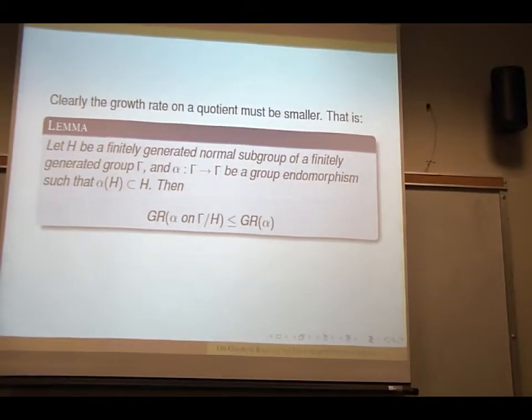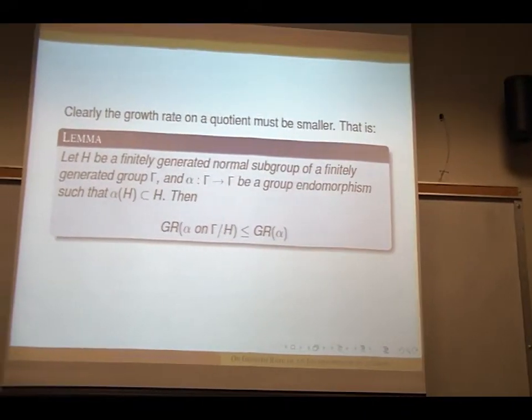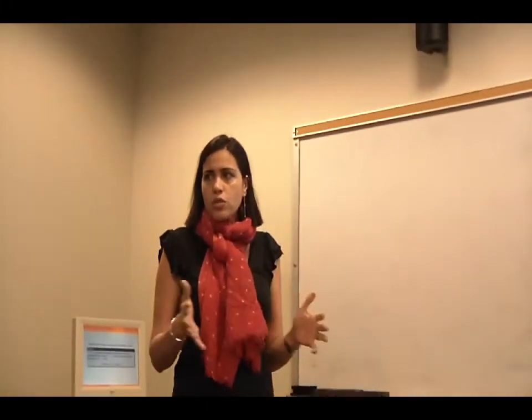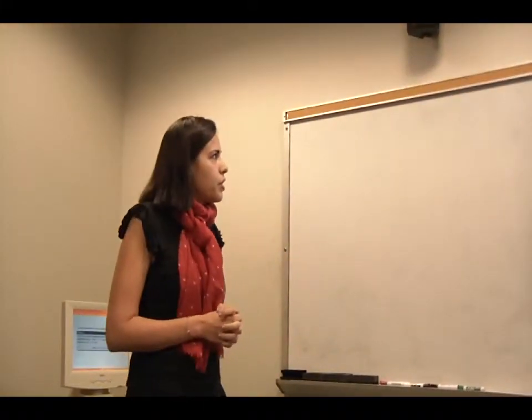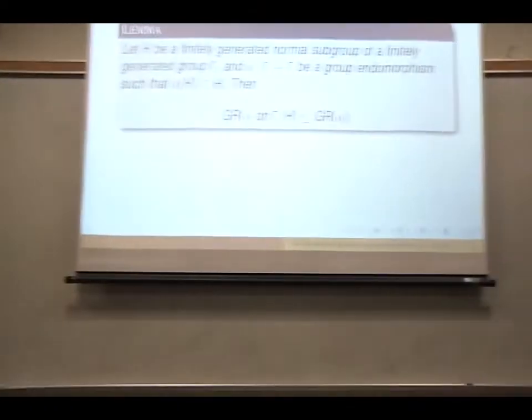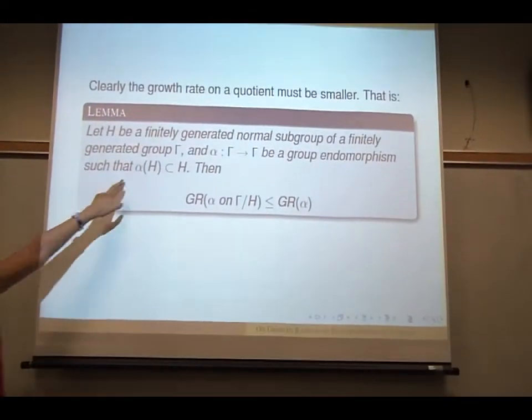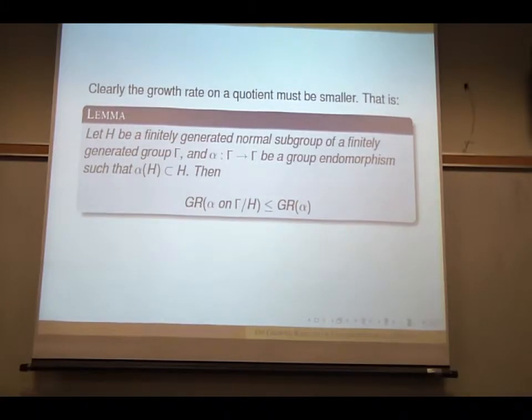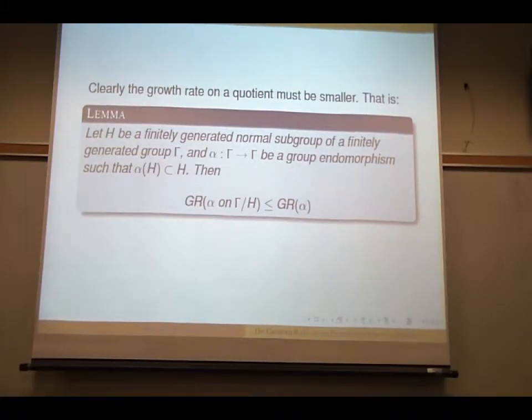So what about the quotient? So suppose you have H, a finitely generated normal subgroup, finitely generated group gamma, and alpha is before an endomorphism, such that this property holds, then the growth rate of the quotient is smaller than the growth rate of alpha in the entire group.